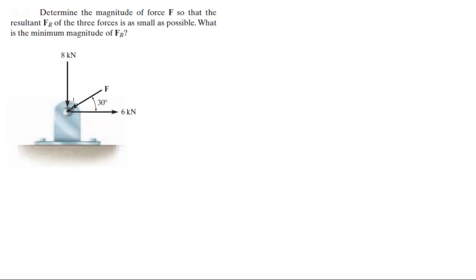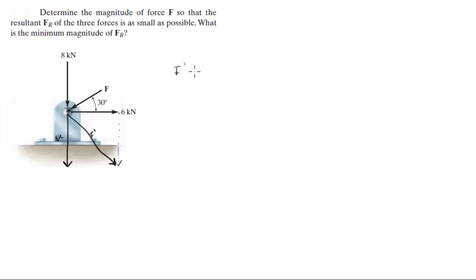To do that, first you have to figure out the resultant force between the first two forces, and lastly we're going to see what's the minimum. So remember, you put them head to toe — this is the 8k — and then you do the parallelogram and you estimate the first resultant force, which we're going to call F'. This one's 8k and this one is 6k.